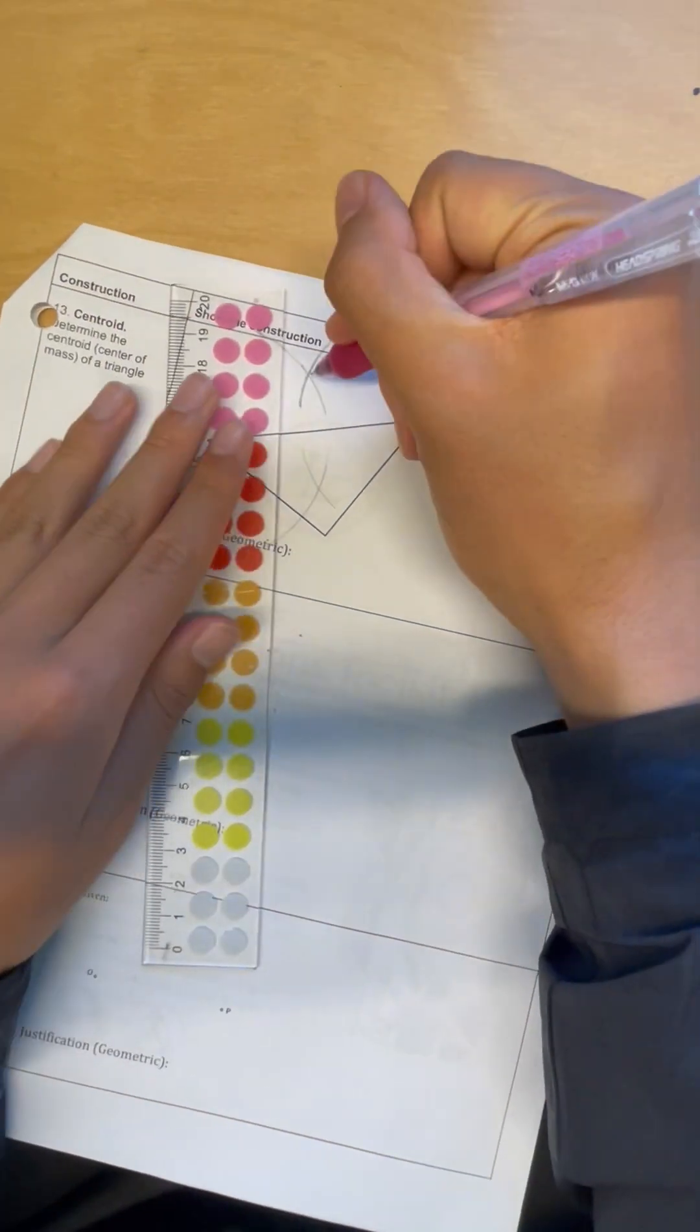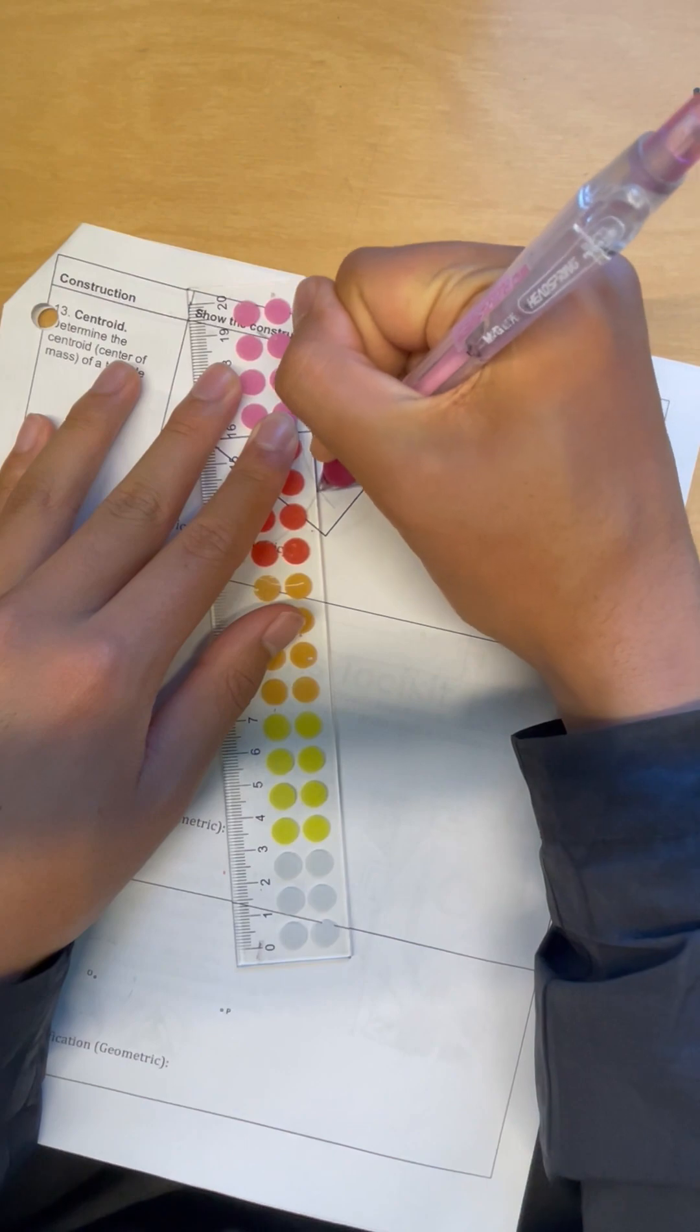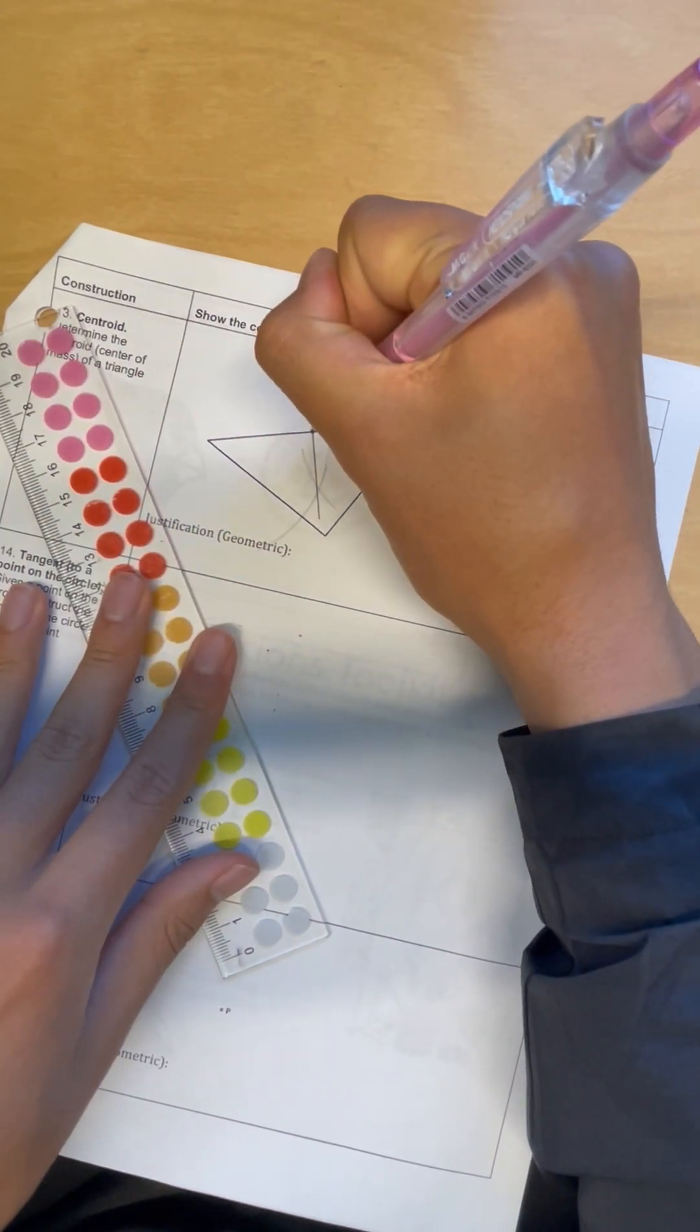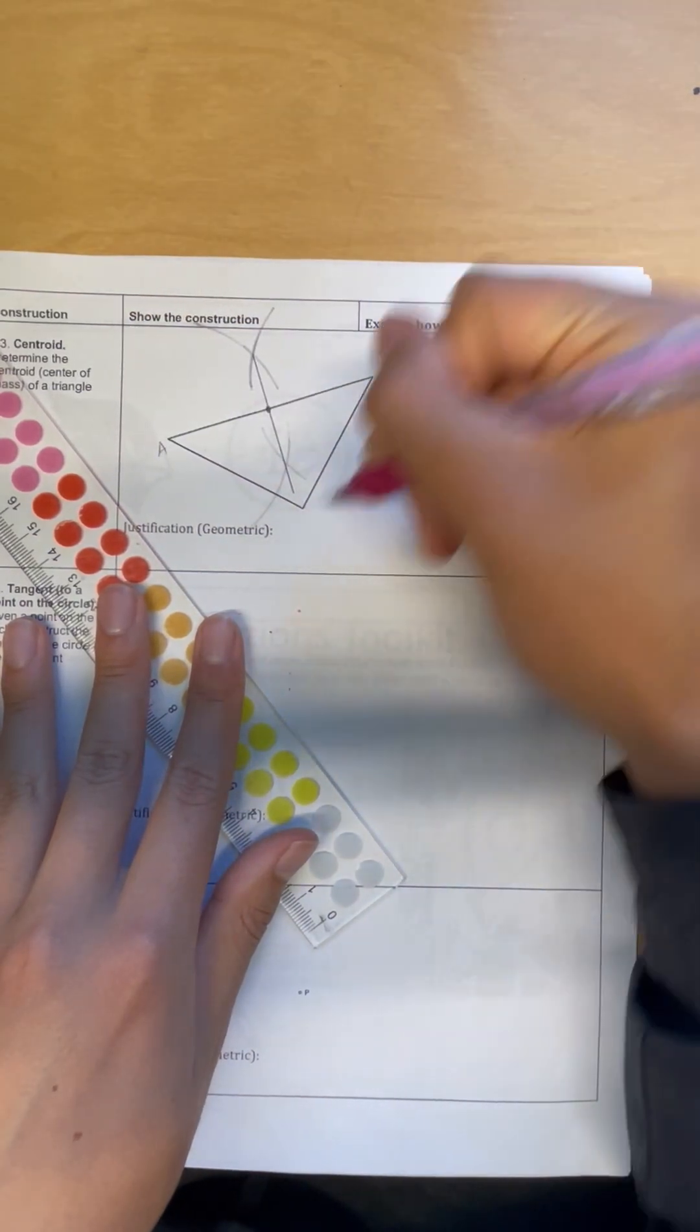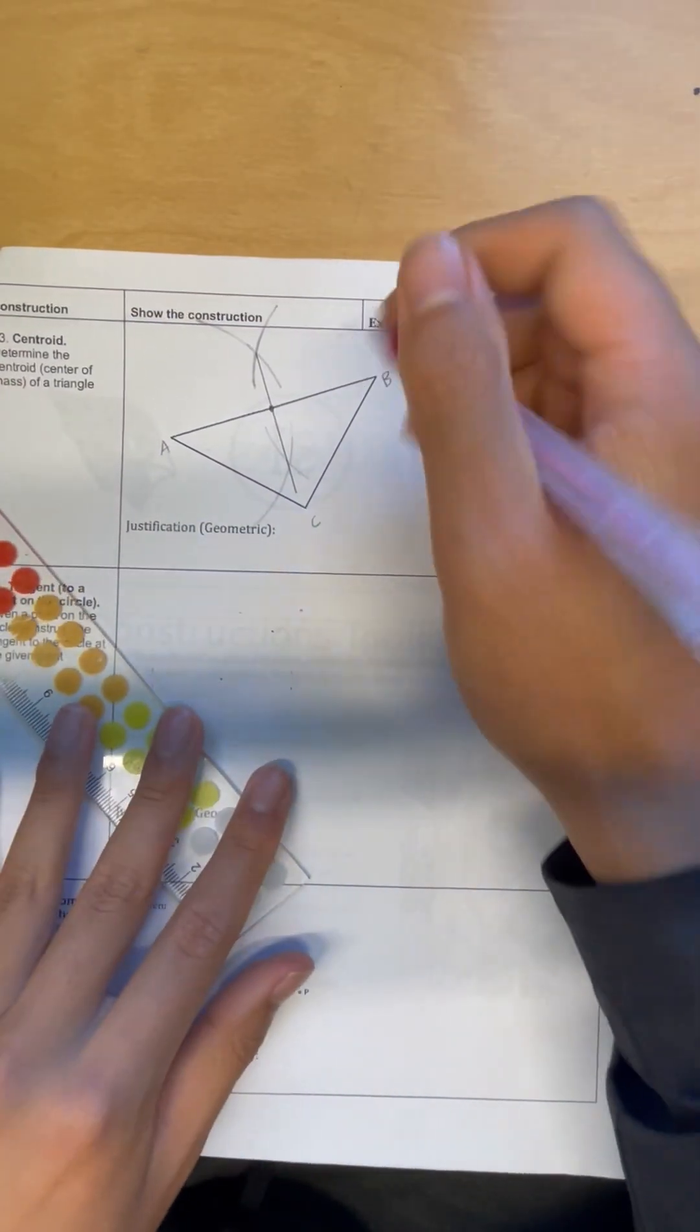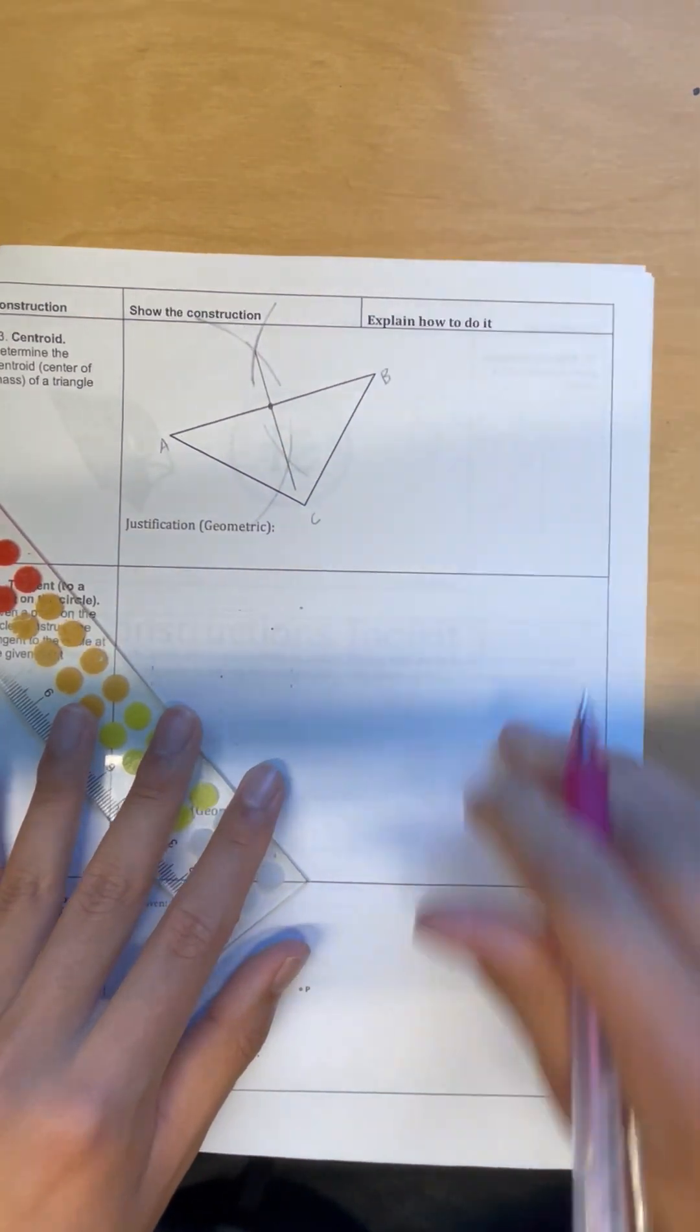There we go. We draw in the perpendicular bisector here, and we find that our midpoint for this segment here, we'll call this AB, and this last point, C. The midpoint for segment AB is going to be there.